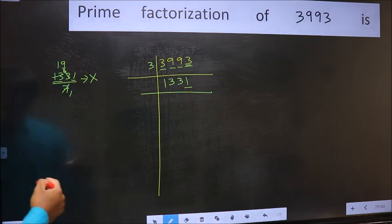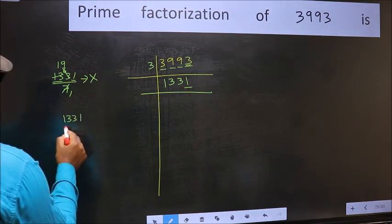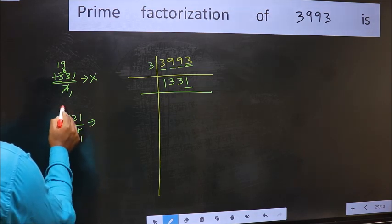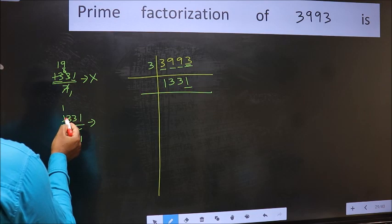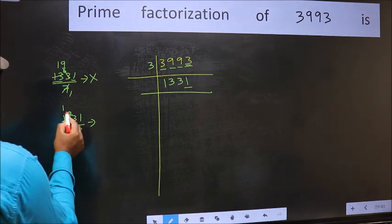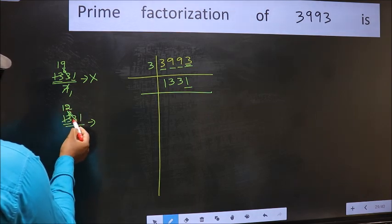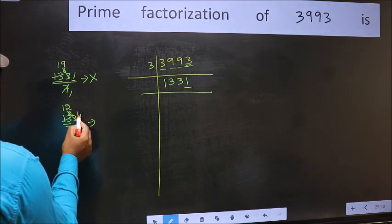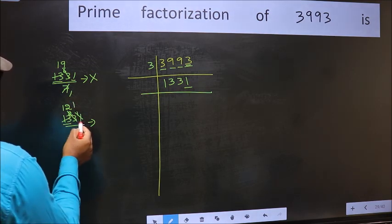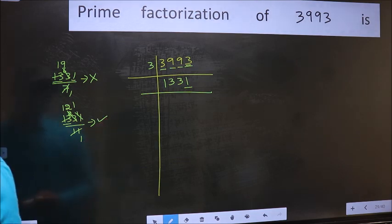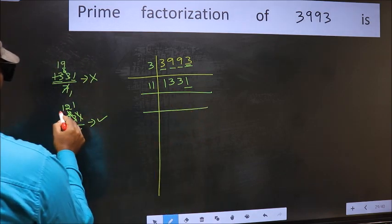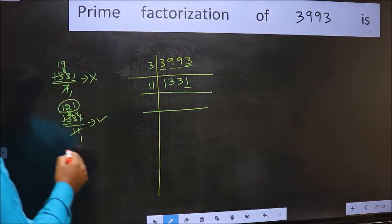Next prime number 11. A number close to 13 in the 11 table is 11 once 11. 13 minus 11 is 2, 2 carried forward gives 23. Close to 23 in the 11 table is 11 twos, 22. 23 minus 22 is 1, 1 carried forward gives 11. 11 once is 11. No number left out, so this is divisible by 11. So we write 11 here, and the quotient is 121.